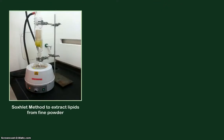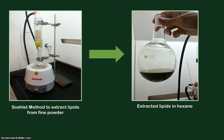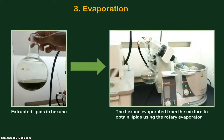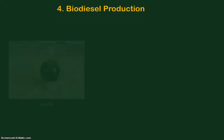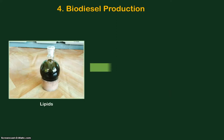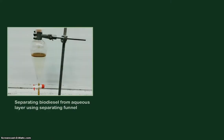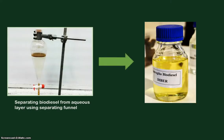The third step is to evaporate the solvent using a rotary evaporator. The fourth process is biodiesel production through transesterification. Finally, the biodiesel is washed and separated from the aqueous layer using a separating funnel.